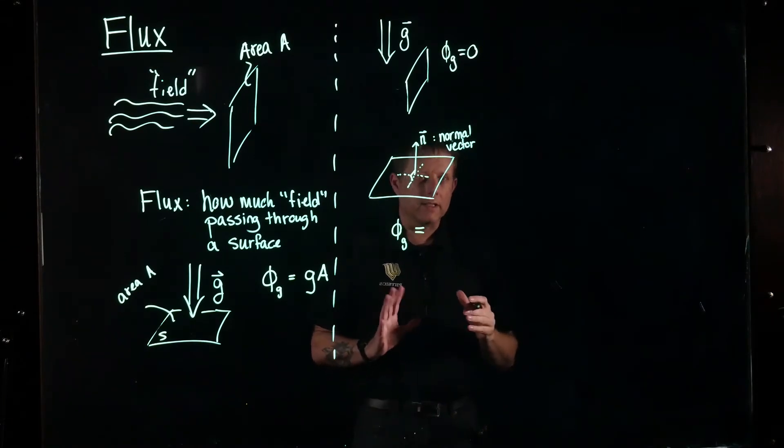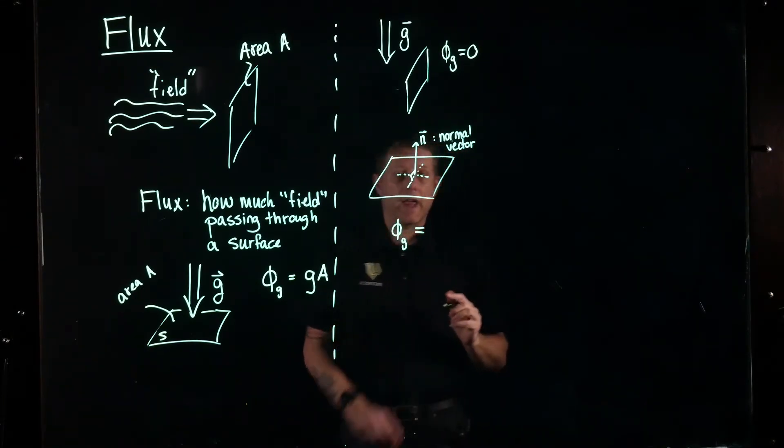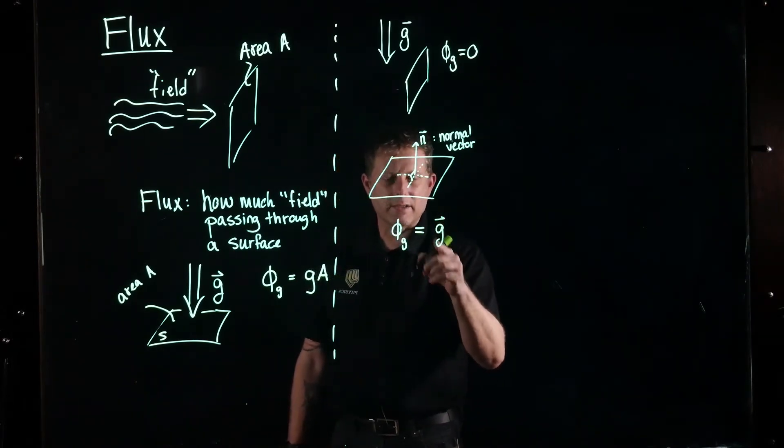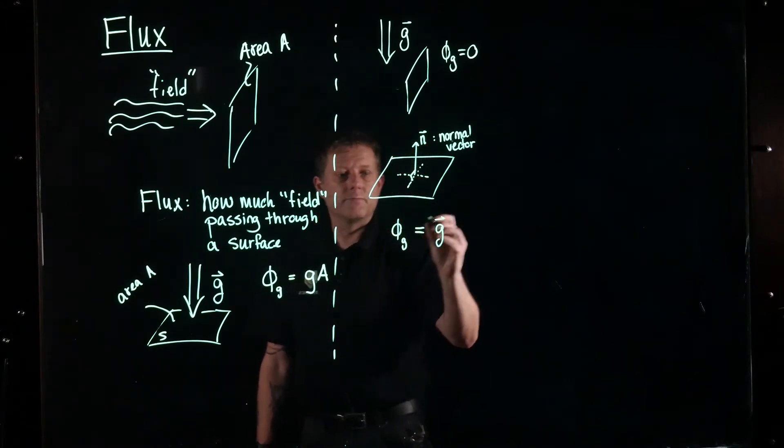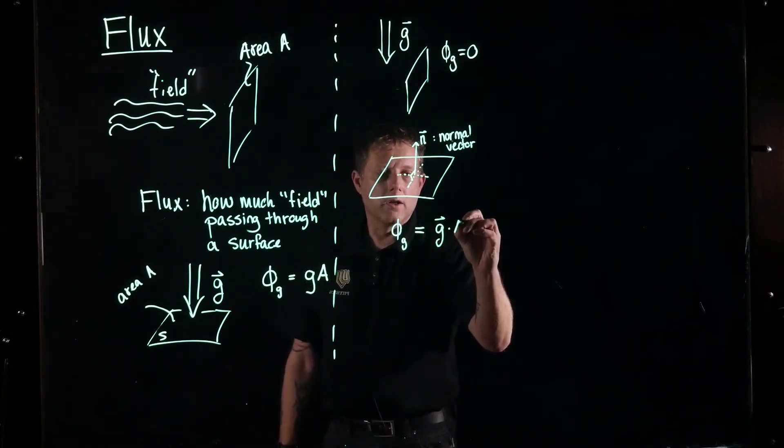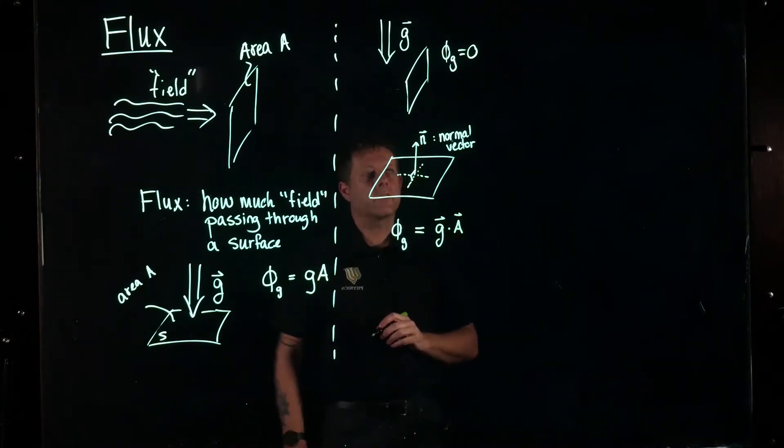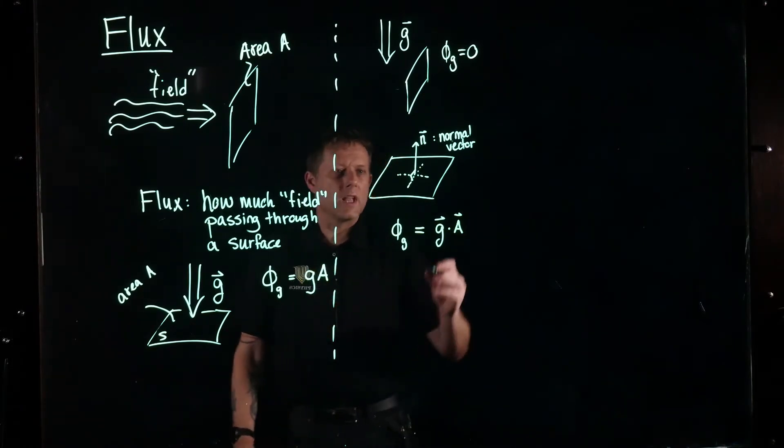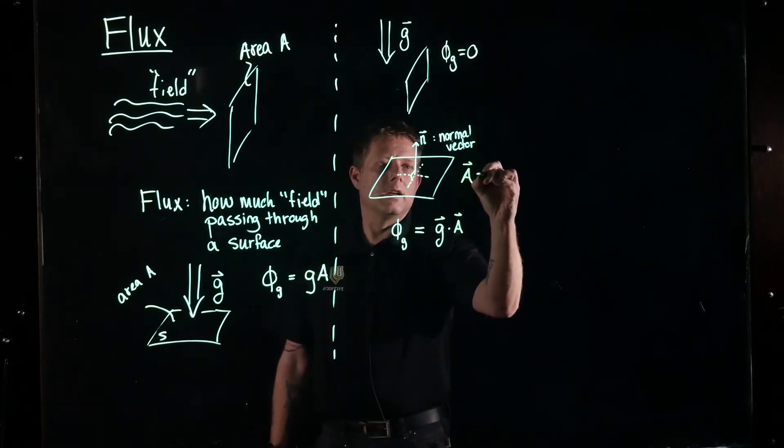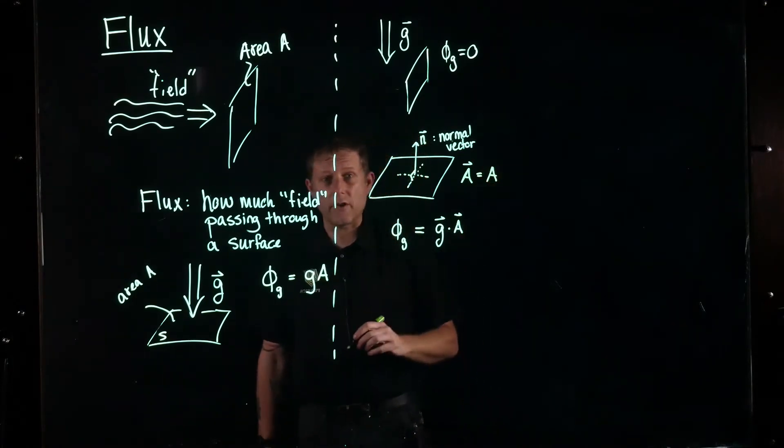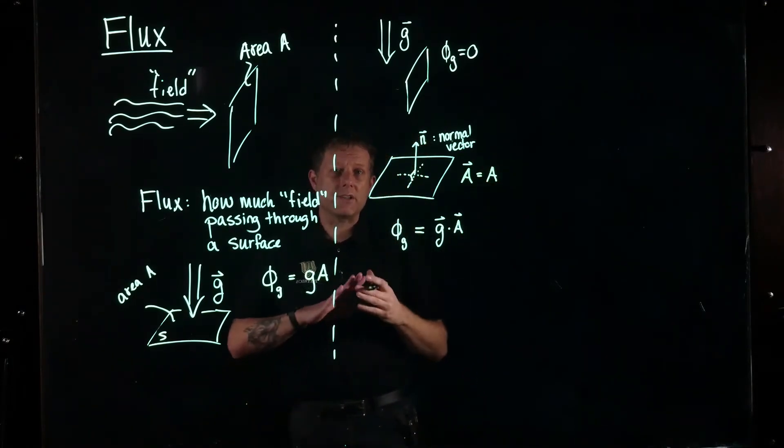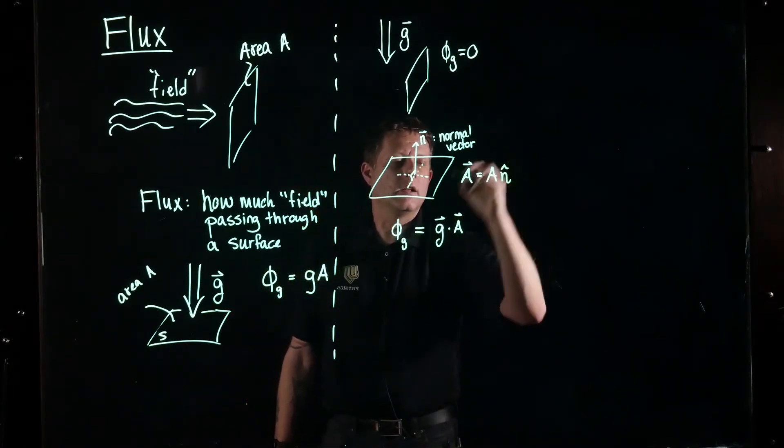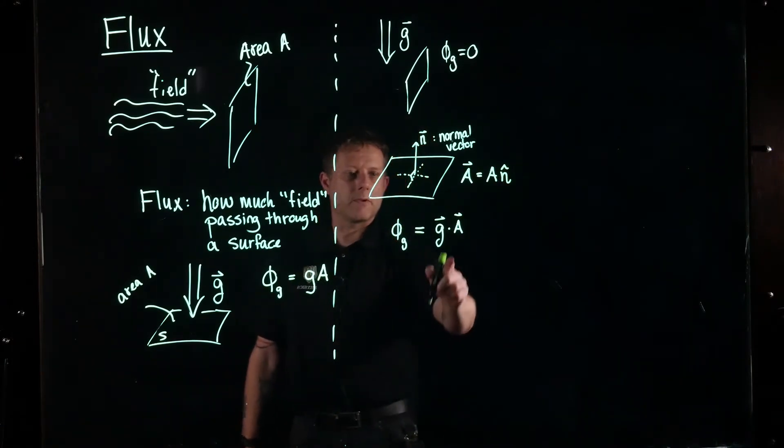We can say the gravitational flux passing through a surface now depends on how these two vectors, the vector field g and the normal vector n that describes the orientation of the surface, how do they orientate with respect to each other? We can do that easily through a dot product. So we define the gravitational flux as the field vector g dotted with the area vector. Wait a second, that area vector, what does that mean? The magnitude of it is simply the area of the surface, and then the orientation, the direction of that area vector, is given by that normal vector.